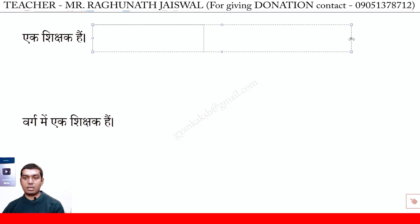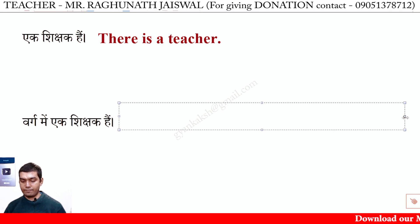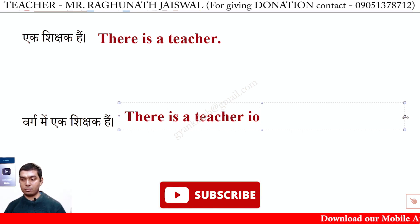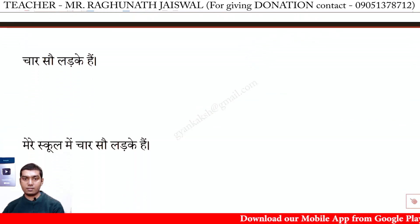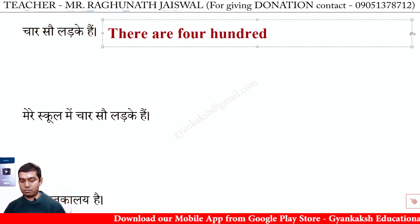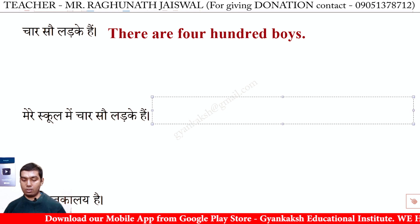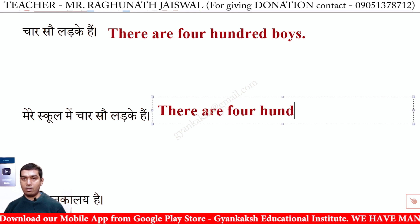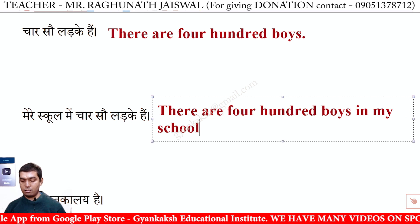Aek shikshak hai — There is a teacher. Varg mein ek shikshak hai — There is a teacher in the class. 400 lardque hai — There are 400 boys. Mere school mein 400 lardque hai — There are 400 boys in my school.